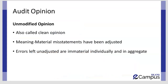The first is an unmodified opinion, which is also called a clean opinion. This means that all material misstatements have been adjusted, and the adjustments that have not been made are either immaterial in isolation or immaterial in aggregate as well. So misstatements could have been aggregated and their aggregate could still be immaterial, and hence there will be no impact on the audit opinion.